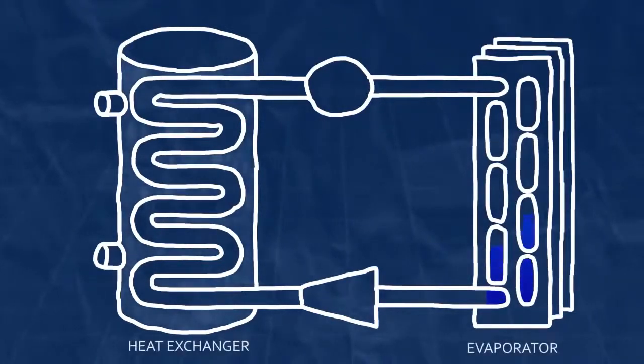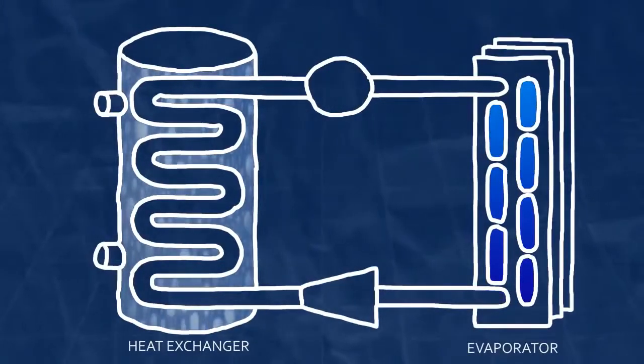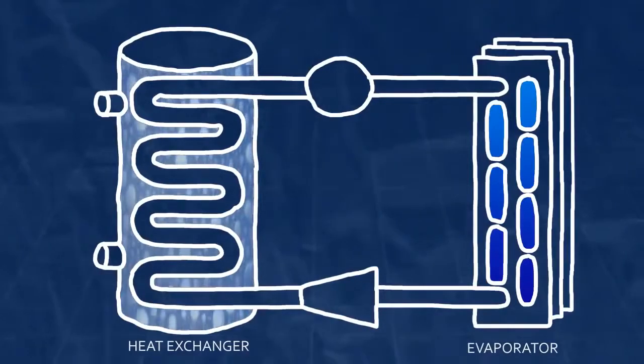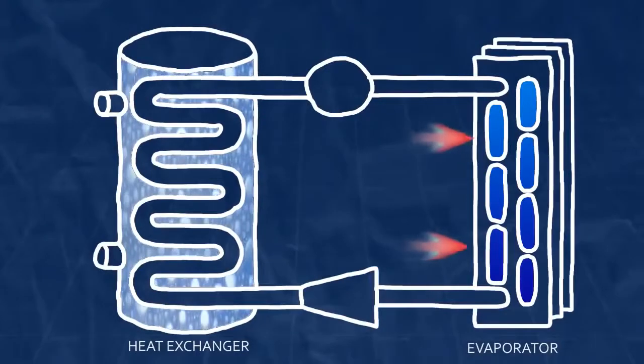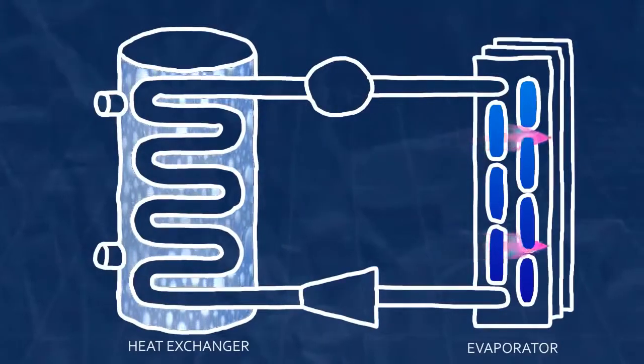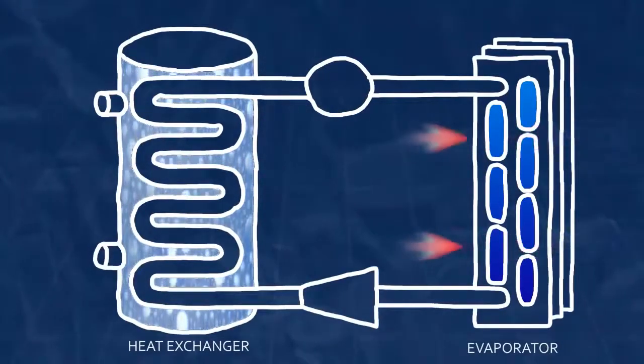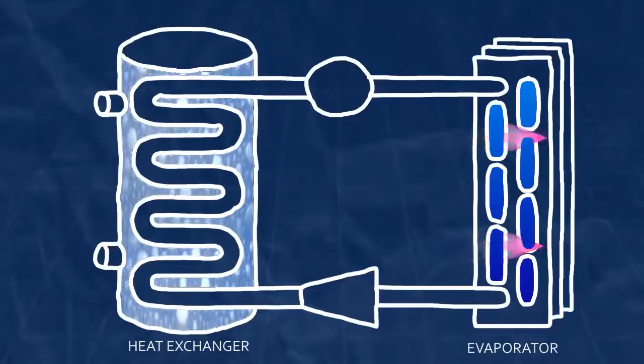In the beginning of a cycle, the refrigerant is in a cold, low pressure, liquid gaseous state flowing through tubes that are exposed to room air. It is colder than the room air, so the heat in the air moves to the refrigerant. This is because heat always wants to move from warmer things to cooler things.